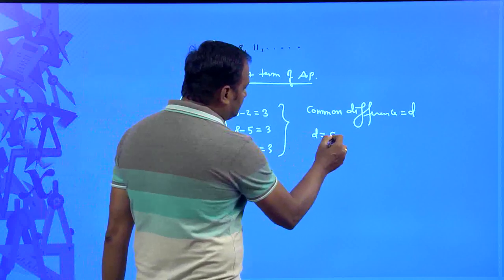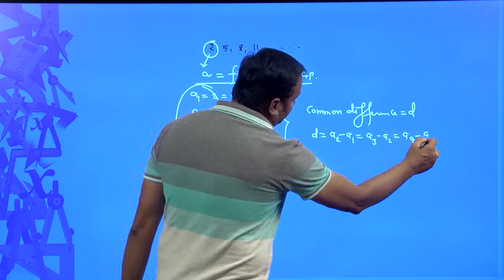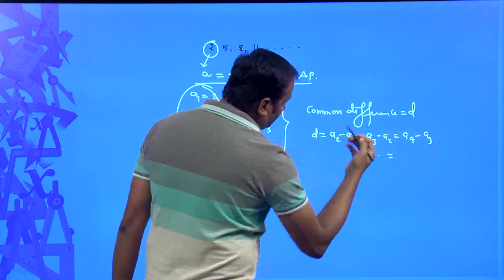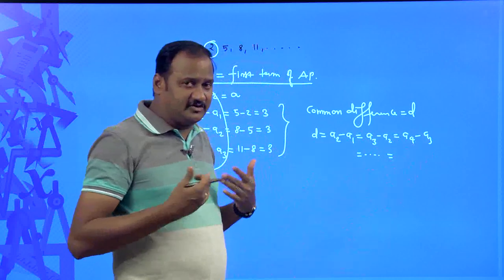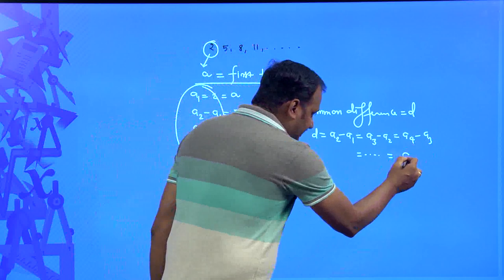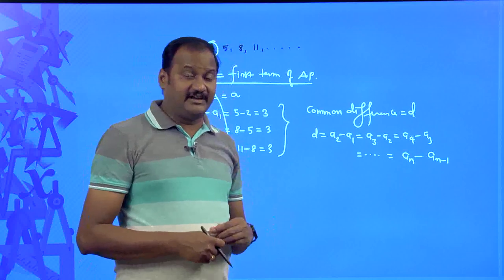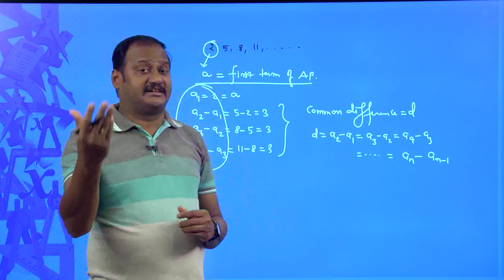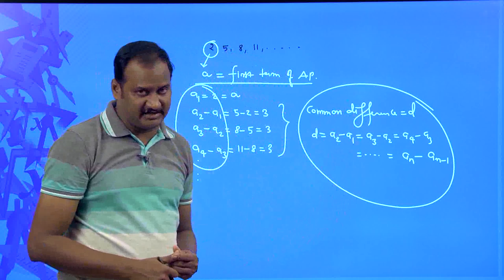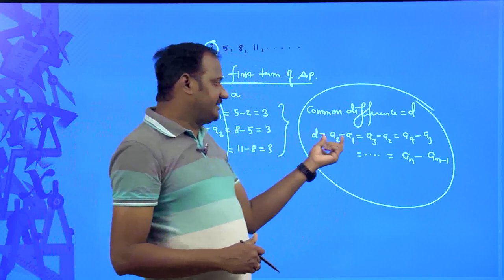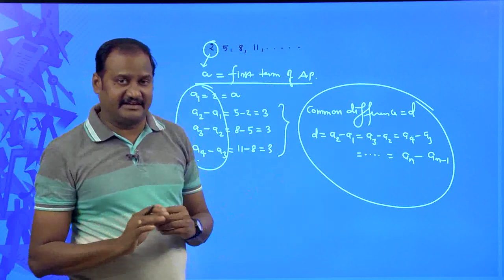The common difference is equal to a₂ minus a₁, which equals a₃ minus a₂, which equals a₄ minus a₃. The general formula for common difference is: aₙ minus aₙ₋₁. This is useful to check whether a given sequence is an arithmetic progression or not. If you find a₂ minus a₁ and a₃ minus a₂ are both the same, then it is an arithmetic progression; otherwise it is not.